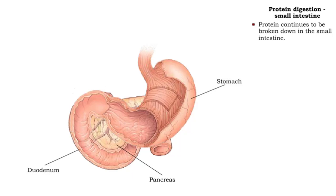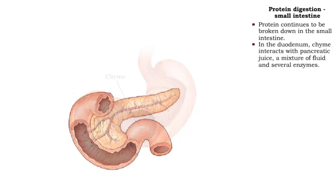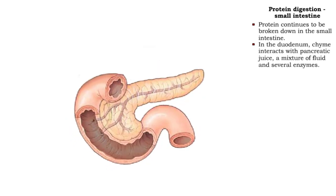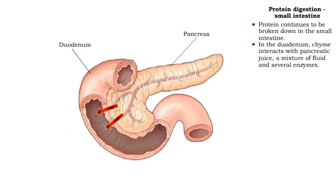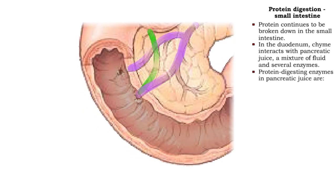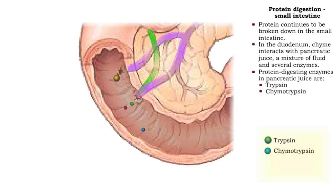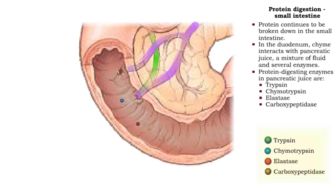Protein digestion continues in the duodenum of the small intestine. As chyme enters the duodenum, it is acted on by a digestive mixture called pancreatic juice. Pancreatic juice contains the protein-digesting enzymes trypsin, chymotrypsin, elastase, and carboxypeptidase.